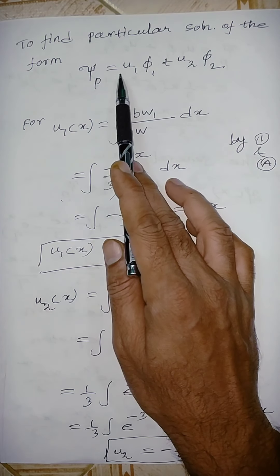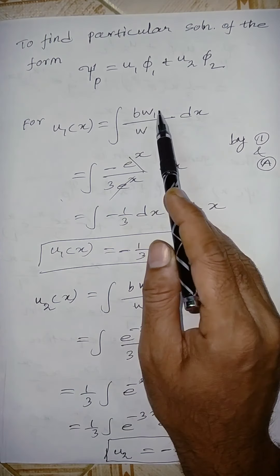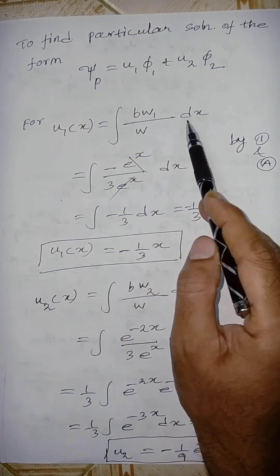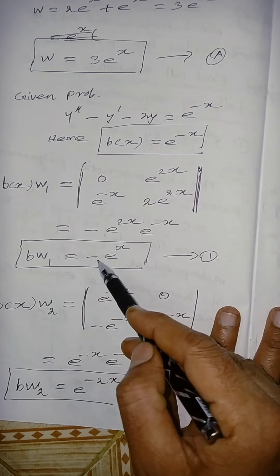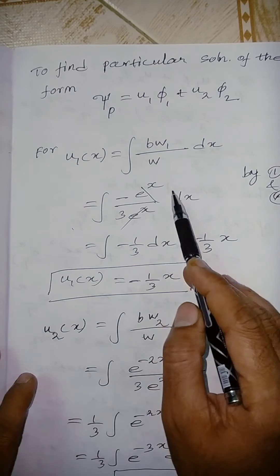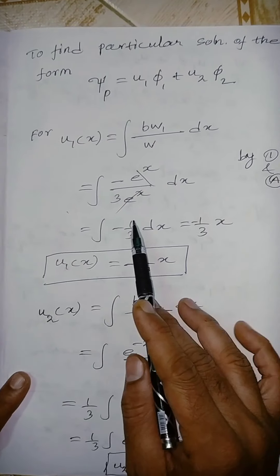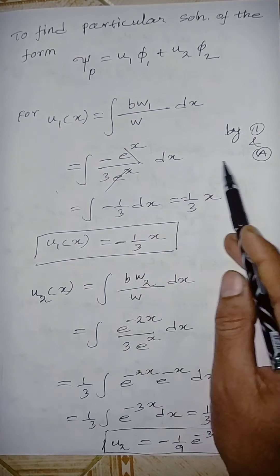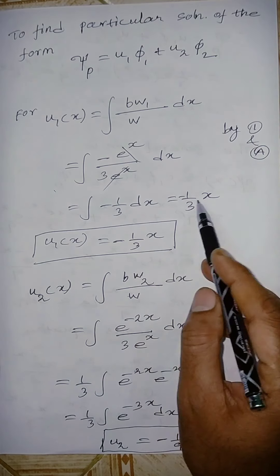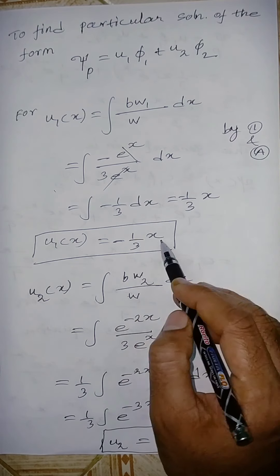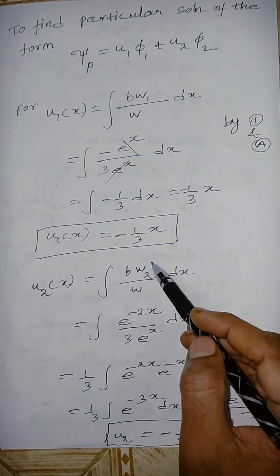To find u₁(x), integrate bW₁/W with respect to x: ∫(−e^x)/(3e^x) dx = ∫(−1/3) dx = −x/3. So u₁ = −x/3.